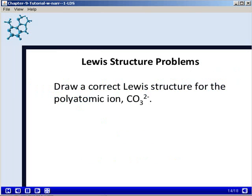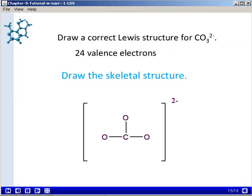And lastly, we'll draw a correct Lewis structure for an ion, in this case, a polyatomic ion, the carbonate ion with a minus 2 charge. If you correctly add up the valence electrons, remembering to add 2 to your total for the negative 2 charge in this ion, you should end up with a total of 24 valence electrons to account for.